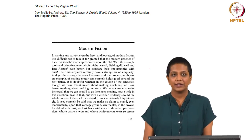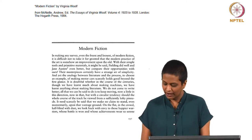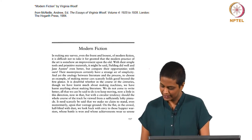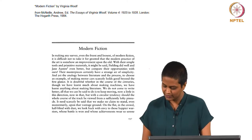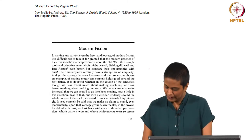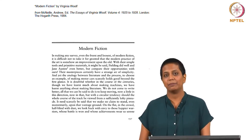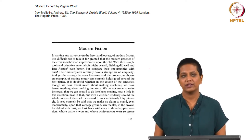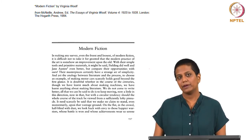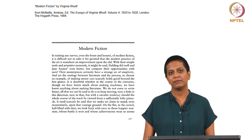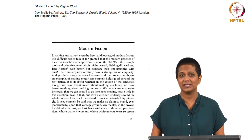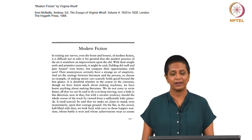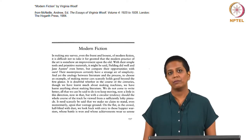Bradbury and McFarlane continue with their definition of modernism in art, saying this is 'an art of a world from which many traditional certainties had departed and a certain sort of Victorian confidence — not only in the onward progress of mankind, but in the very solidity and visibility of reality itself — had evaporated.' This is very important. The idea of traditional certainties having departed is key to understanding modernism, because the modernists were consciously or unconsciously rebelling against what came before — the traditions of the Victorian era with its certainty that technology would lead to the growth and development of mankind.